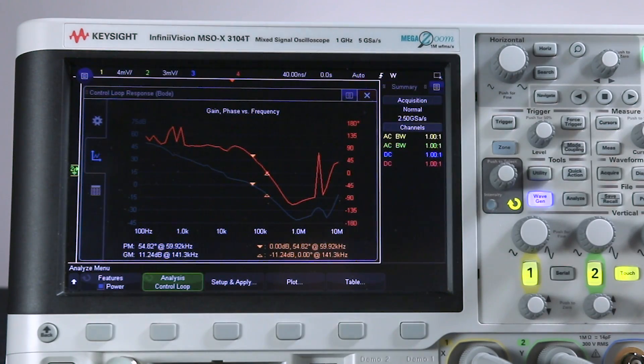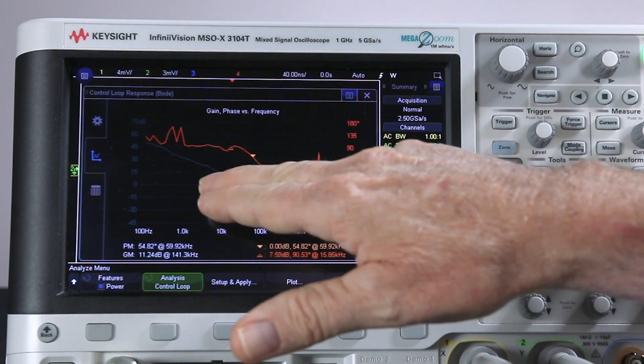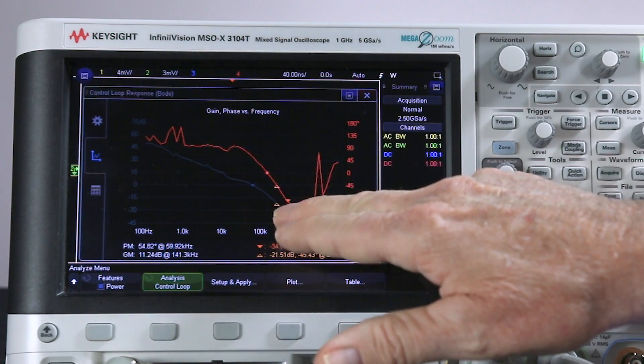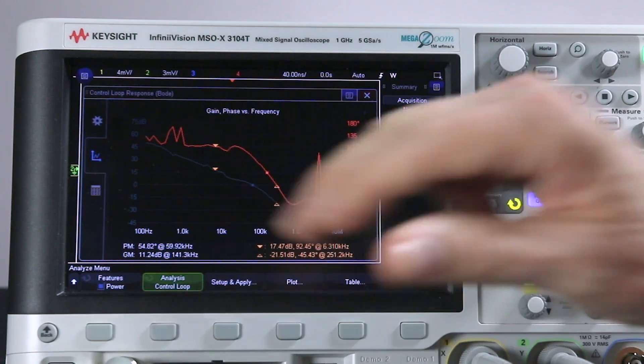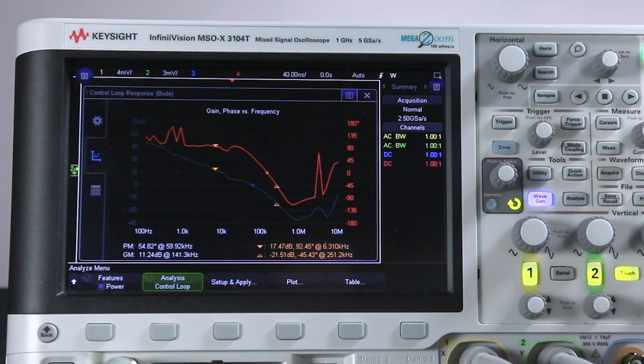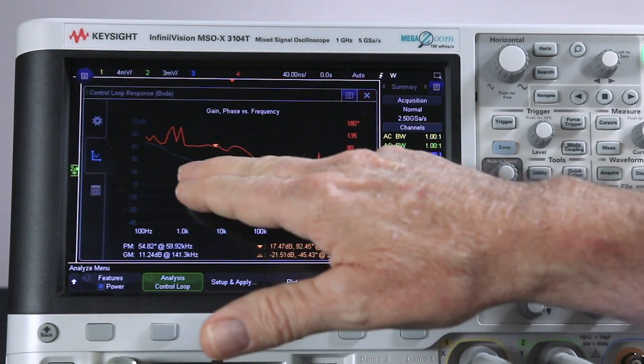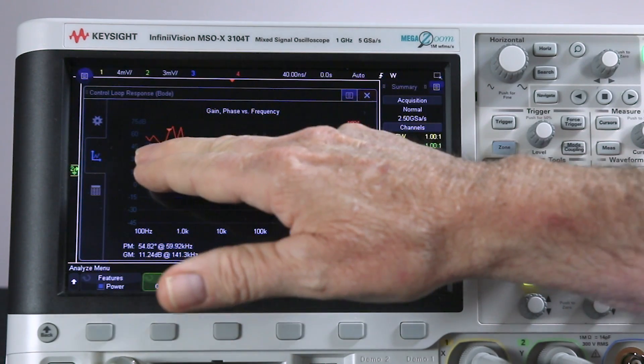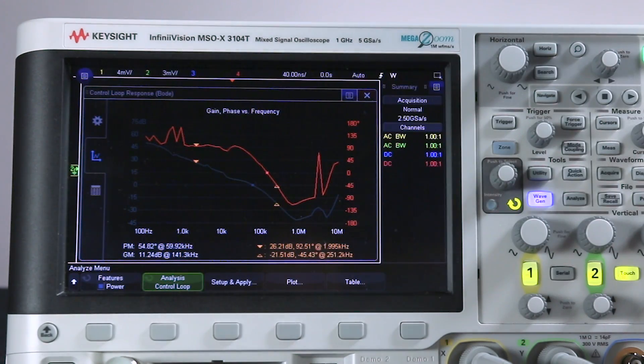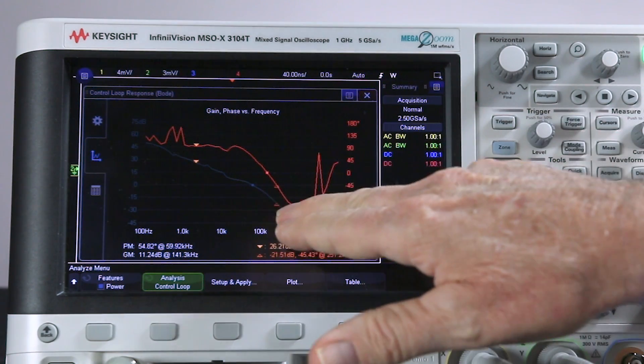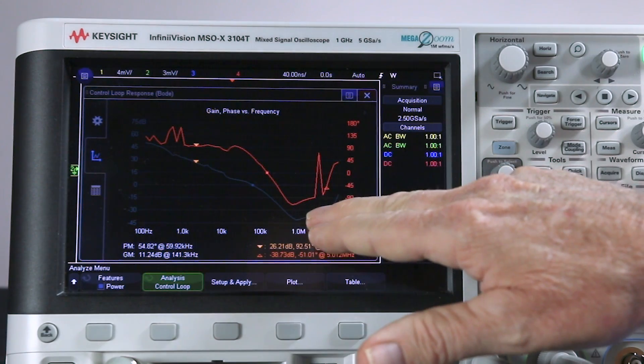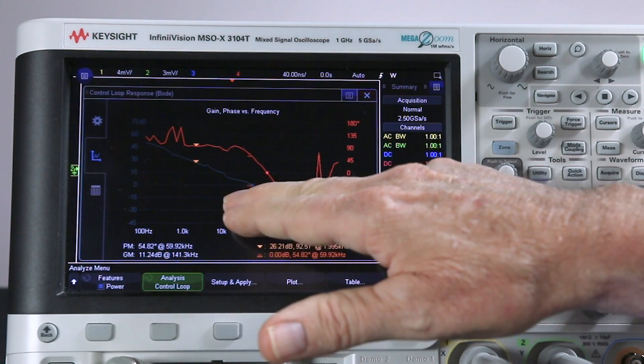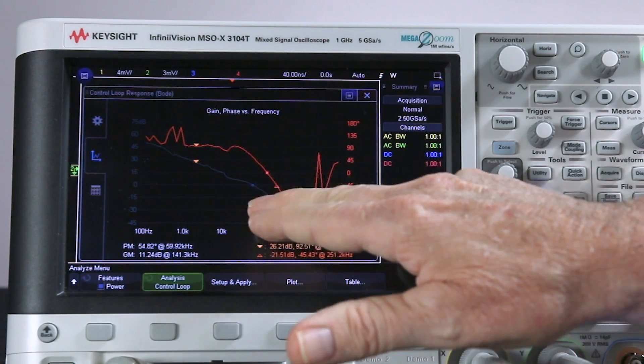Now, we can move the cursors independently. There's two independent cursors. The phase margin and gain margin measurements stay there. Now, you'll notice up here at the lower frequencies, we have what I call chatter going on. The problem there is we have our signal-to-noise ratio is too low, and we have similar phenomena going on here at the upper frequencies.